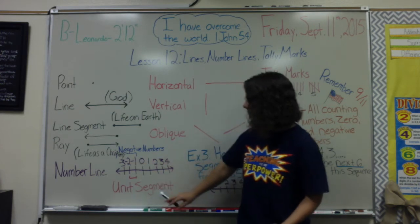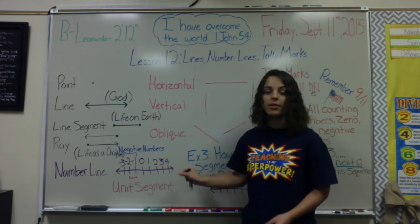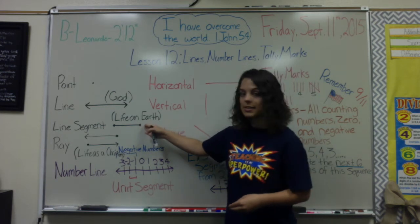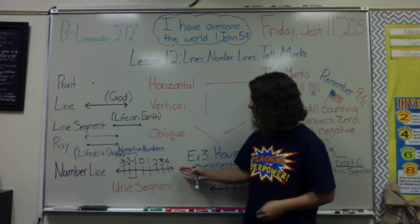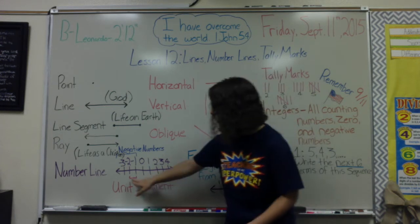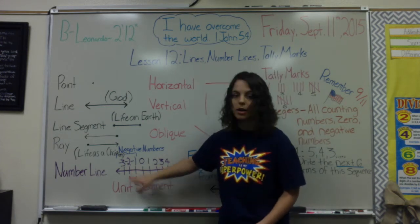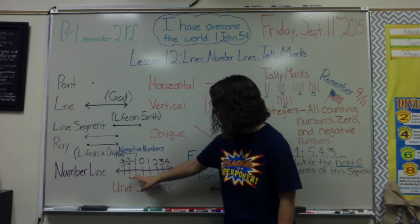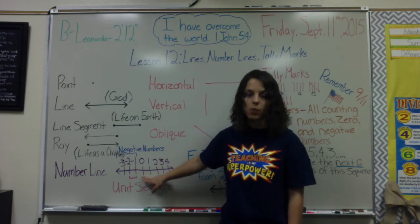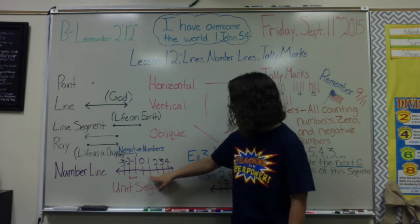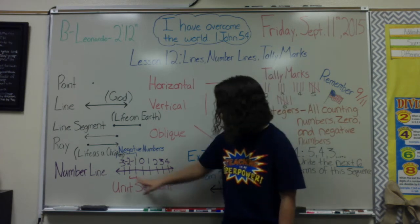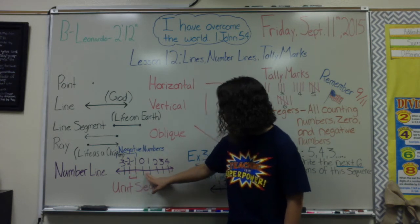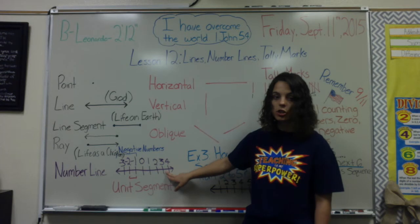We won't be dealing with negative numbers much at the beginning of this year, maybe until the spring. The key thing to remember with number lines is unit segments. We know a segment has a beginning and an end, so on our number line, unit segments are simply the space between every number. For example, the space between negative two and negative one is one unit segment, and so on. Altogether, this number line has seven unit segments.